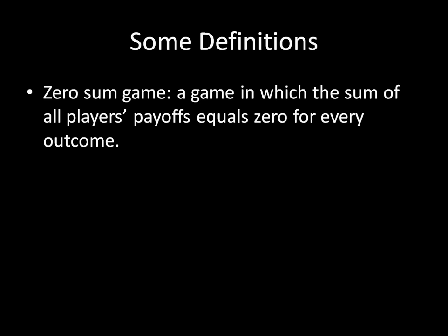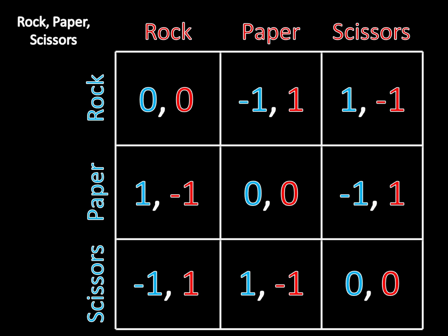Rock, Paper, Scissors — the game we looked at in the last video — is one such game. It's a zero-sum game. We have nine different outcomes. If we look at Rock and Rock, Player 1 plays Rock, Player 2 plays Rock, both players get zero, so if you sum those together, that equals zero — a zero-sum outcome. And it's also true that the remaining six outcomes are zero-sum. If Player 1 plays Paper and Player 2 plays Rock, Player 1 gets positive one, Player 2 gets negative one, but one plus negative one adds to zero. And that's true for all remaining outcomes. So in every single outcome, the players' payoffs sum to zero — this is a zero-sum game.